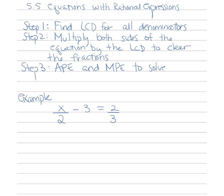Let's try a simple problem: x over 2 minus 3 equals 2 thirds. This is not a rational expression equation, but it uses the same method — eliminating fractions will make it much easier to solve. All denominators include a 1 underneath the 3, so the LCD of 2, 1, and 3 is 6.